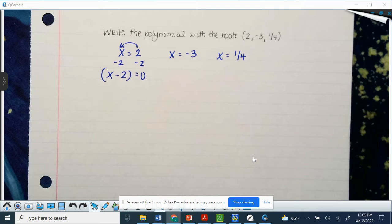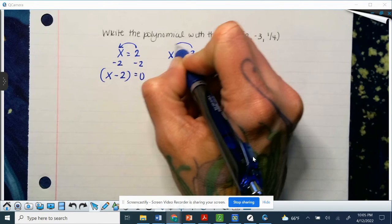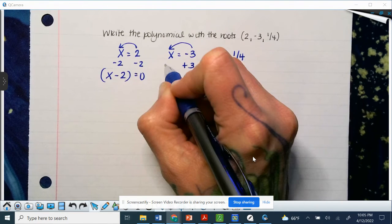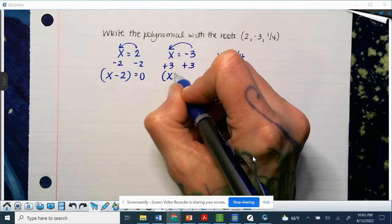And would be set equal to 0, if you remember that from quadratics. Again, we're going to move the negative 3 over by adding it to both sides. So we get it set equal to 0, so x plus 3.